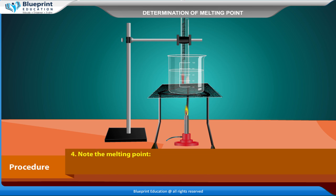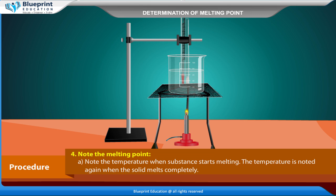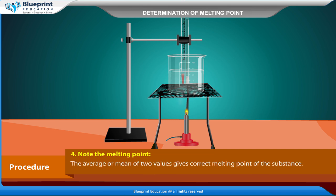Note the melting point. Note the temperature when the substance starts melting. The temperature is noted again when the solid melts completely. The average of these two values gives the correct melting point of the substance.